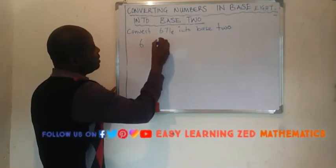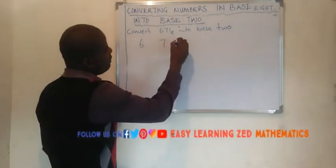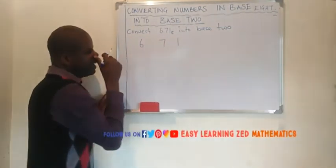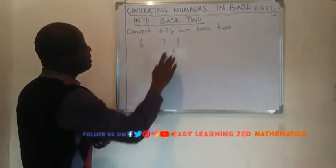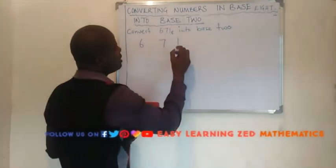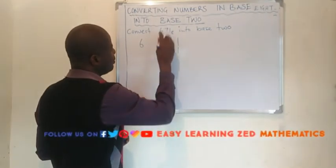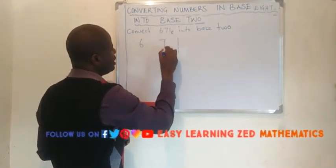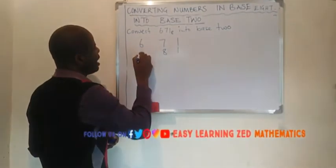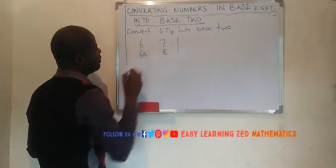So what we're going to do, we're going to write these numbers in a figure. Then let's identify their place values. So this number 1 has the place value of 1s, 7 has the place value of 8s, 6 has the place value of 64s.